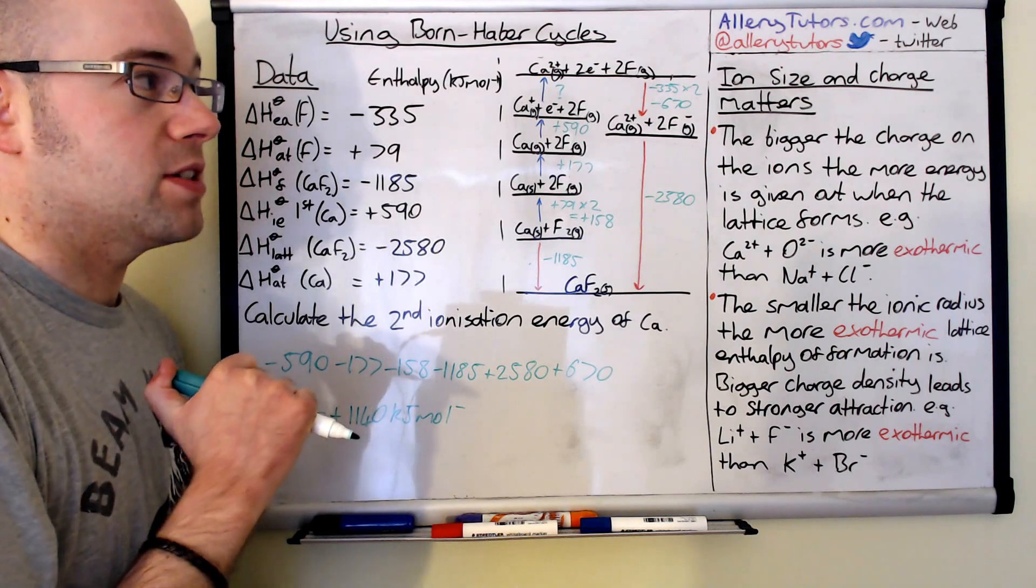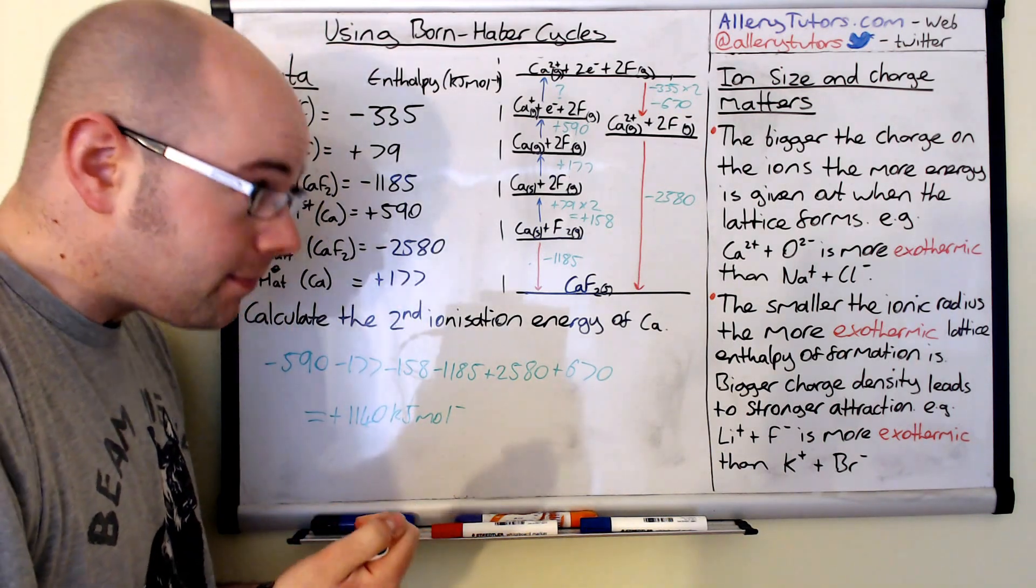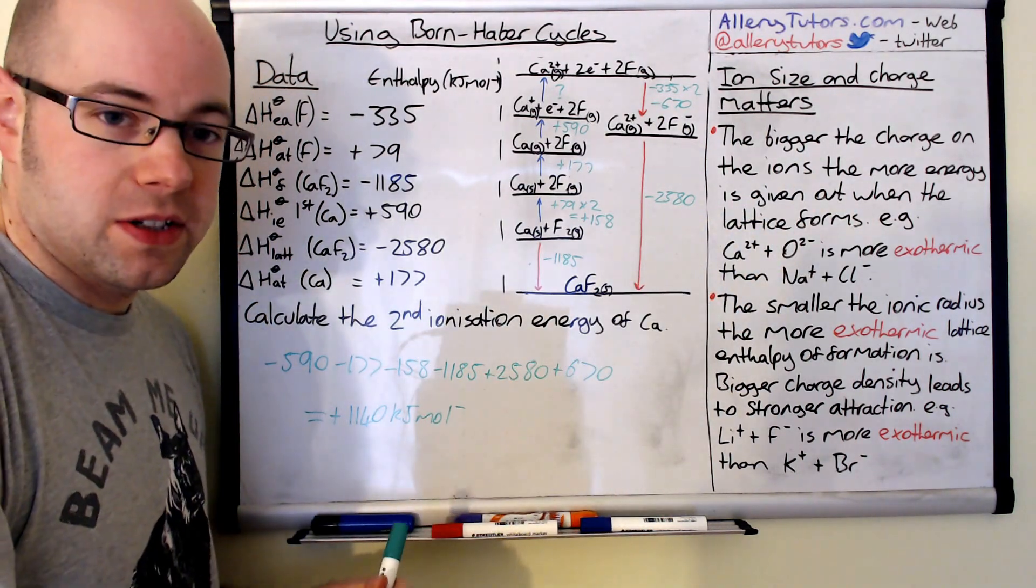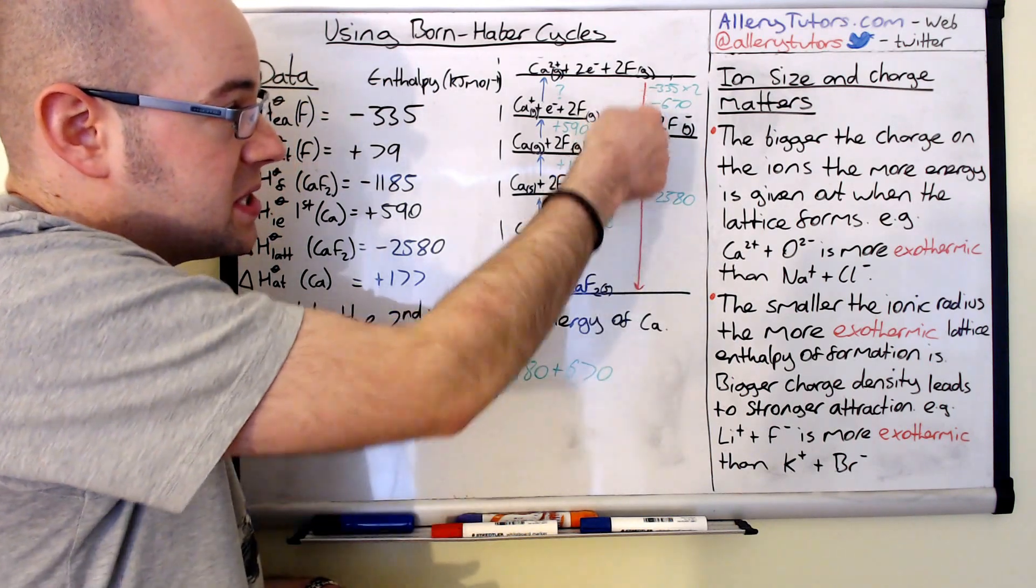Okay. Just the final thing as well which is ion size and charge. And this is really important. Basically the bigger the charge on the ion the more energy is given out when the lattice is formed. So remember this is the lattice enthalpy of formation. This is this bit here.